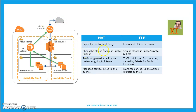To summarize: ELB works as a reverse proxy, and NAT gateway works as a forward proxy. You should always place NAT instances or NAT gateways only in the public subnet — you cannot keep them in the private subnet. ELB can be in public or private. The key distinction is the direction of traffic: always think about the direction in which traffic originates, and you will never get confused.